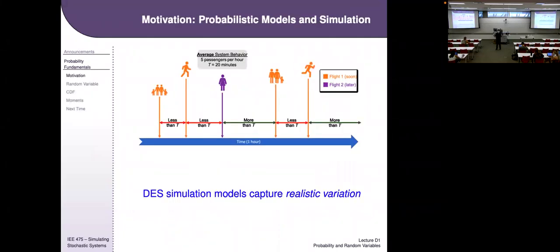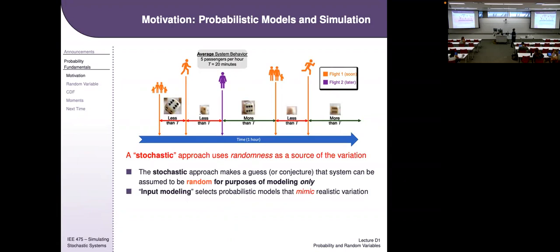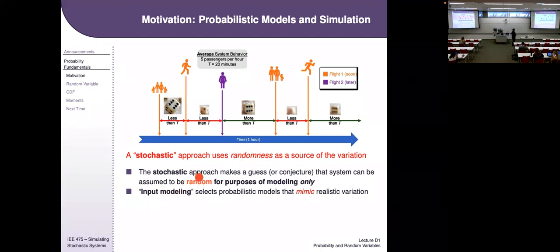Today we're talking about probabilistic modeling. The rest of the course is about discrete event system simulation — stochastic models where we try to generate simulations with realistic variation. We use randomness as a source of that variation. We're not saying real-world systems are random; we're saying it would be hard to model all details deterministically. So we use randomness to simplify modeling — that's stochastic modeling.